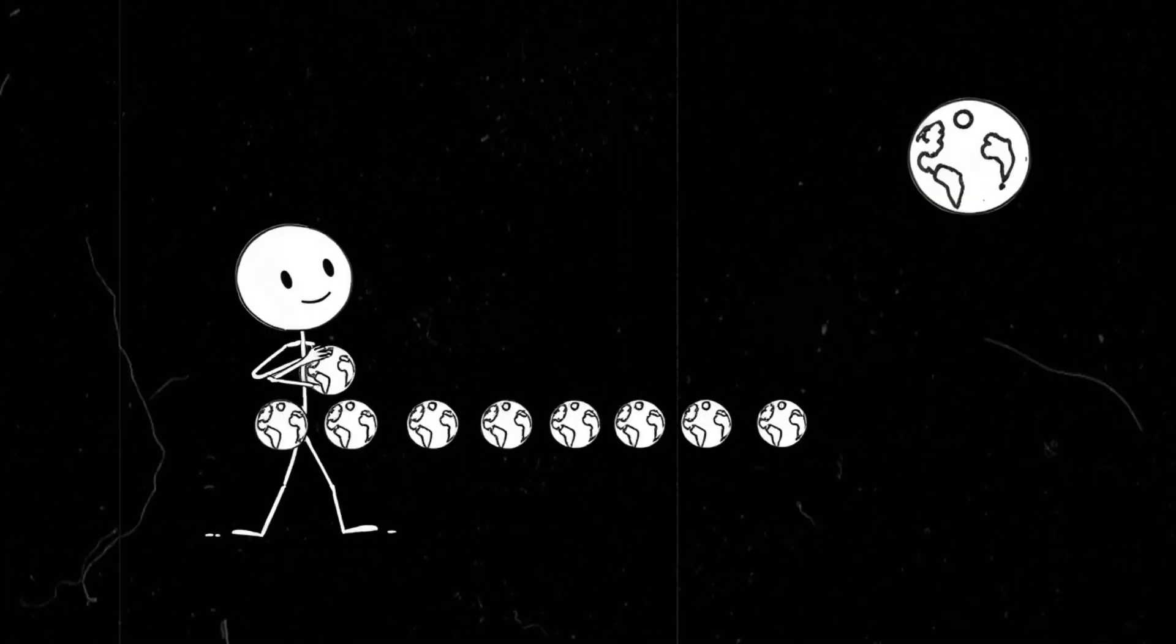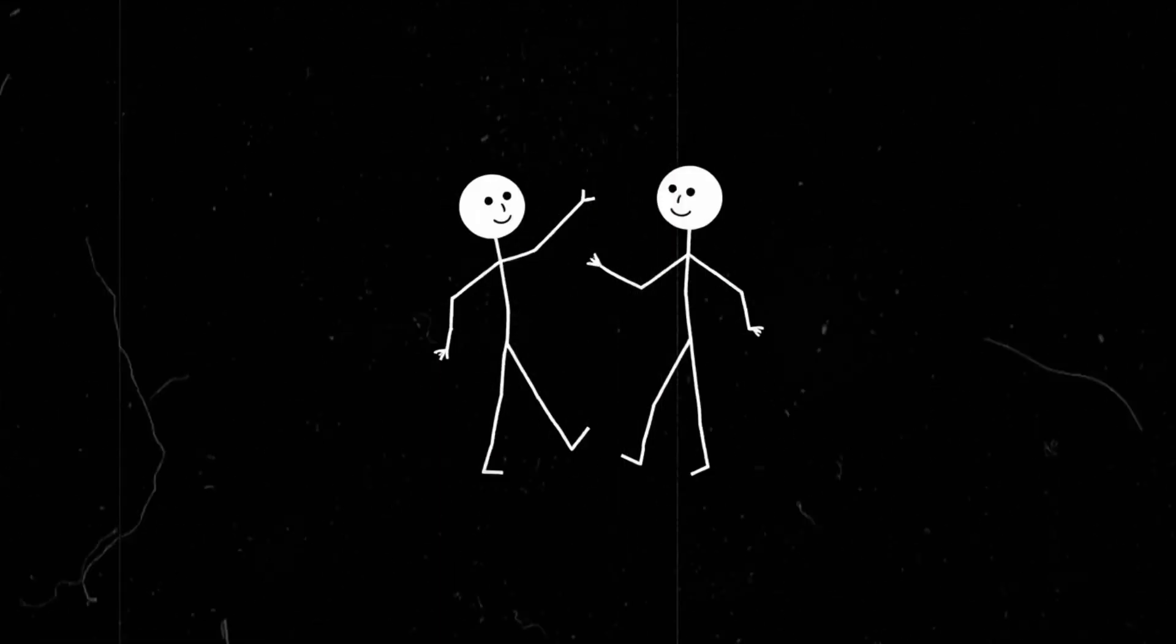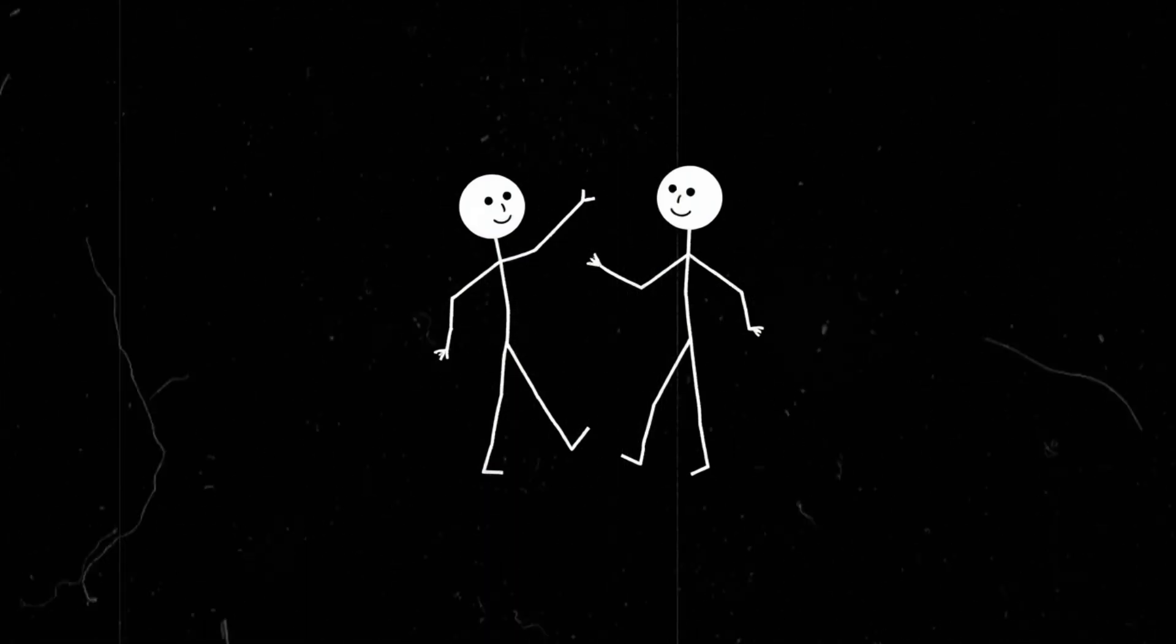That's far, far enough that you could fit 30 Earths in the space between us. But this distance is no accident. It's a delicate balance of gravitational forces. Earth pulls on the moon, and the moon pulls on Earth, but they've reached a stable relationship. Like two dance partners who have found the perfect distance to keep from tripping over each other. Now, what happens if we nudge the moon closer?